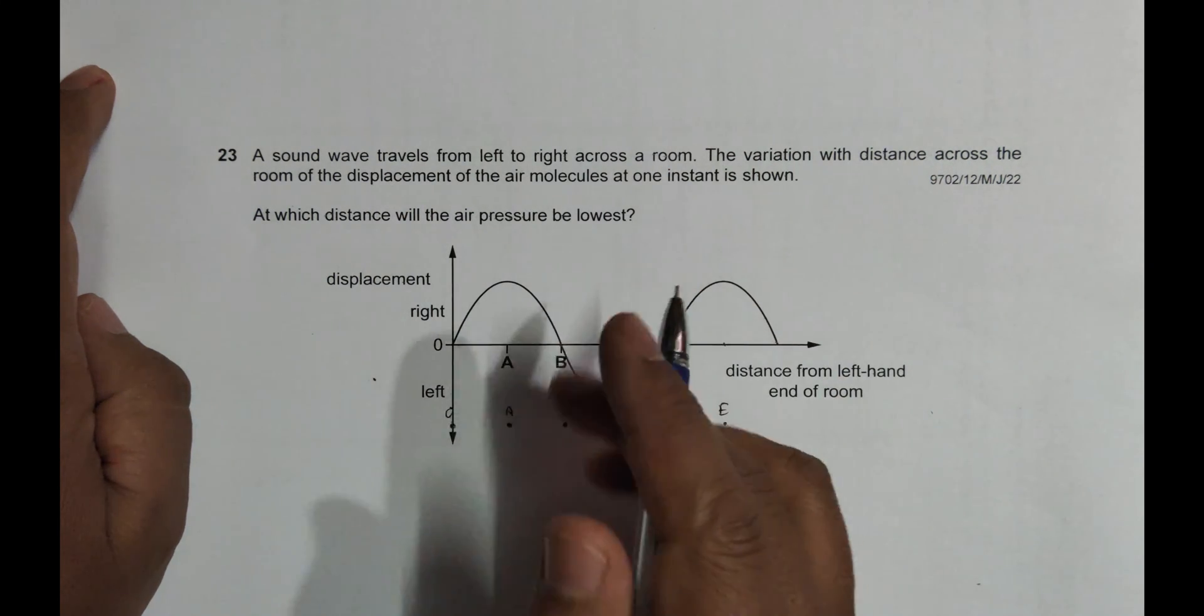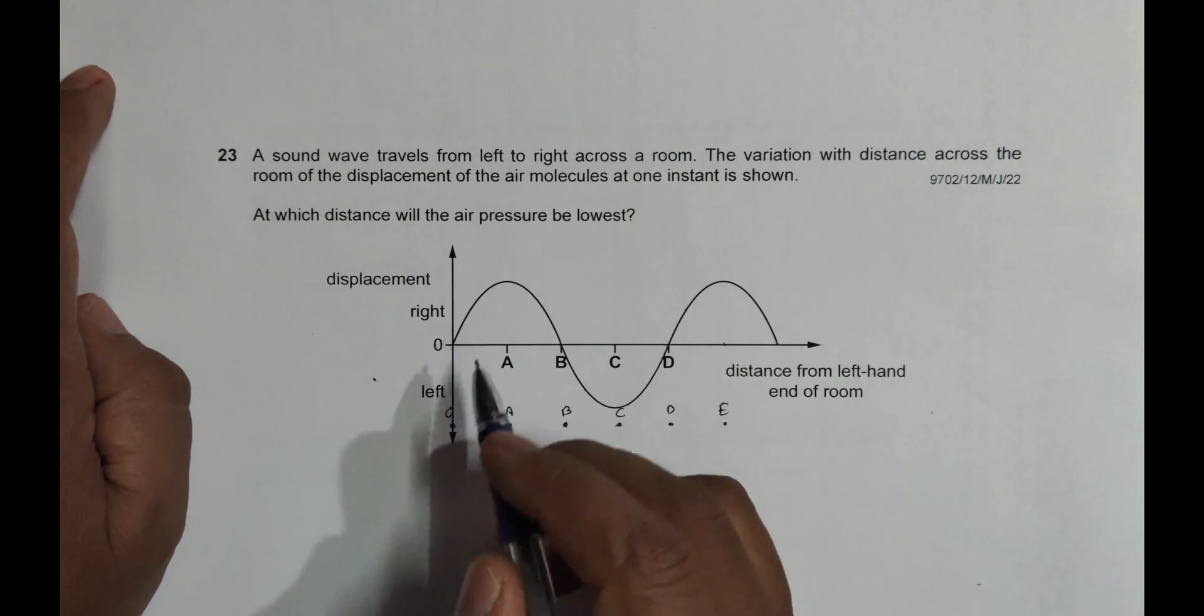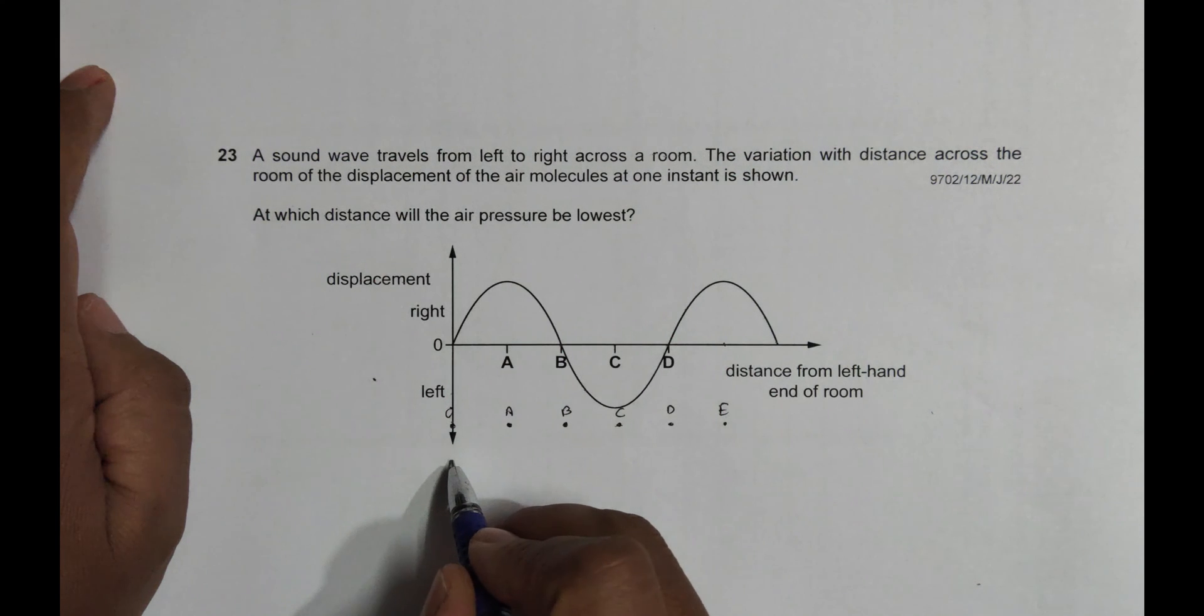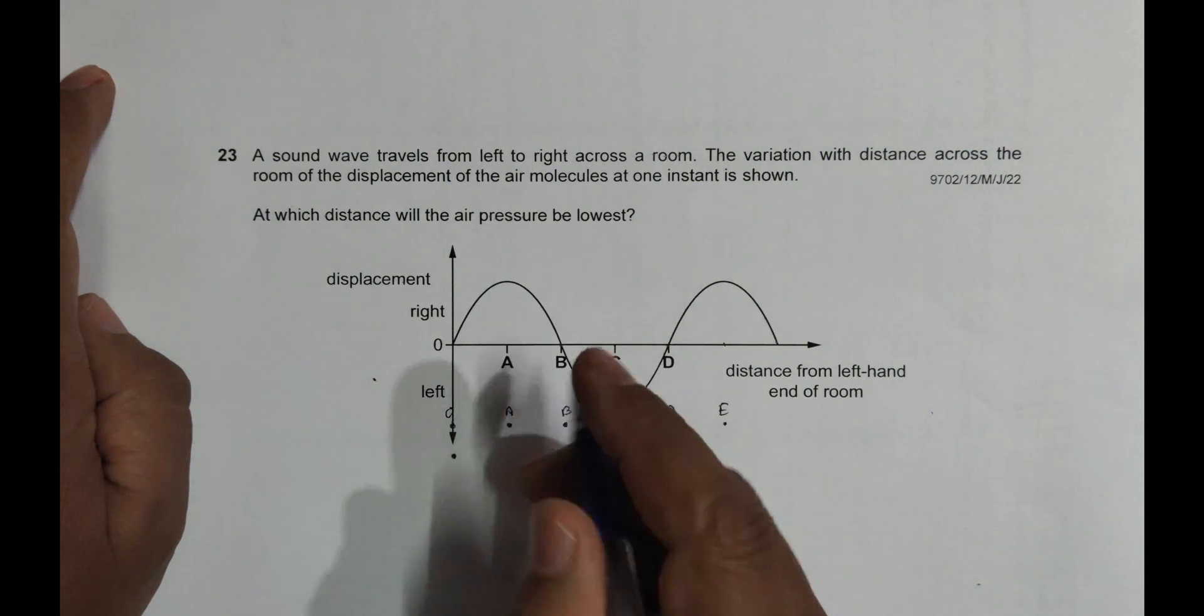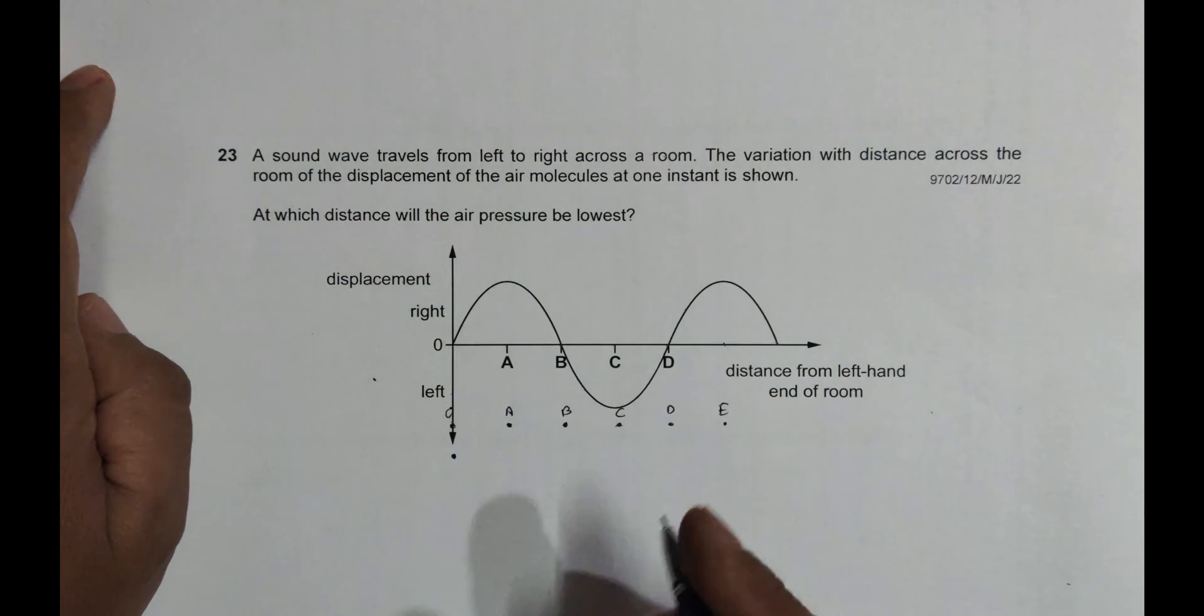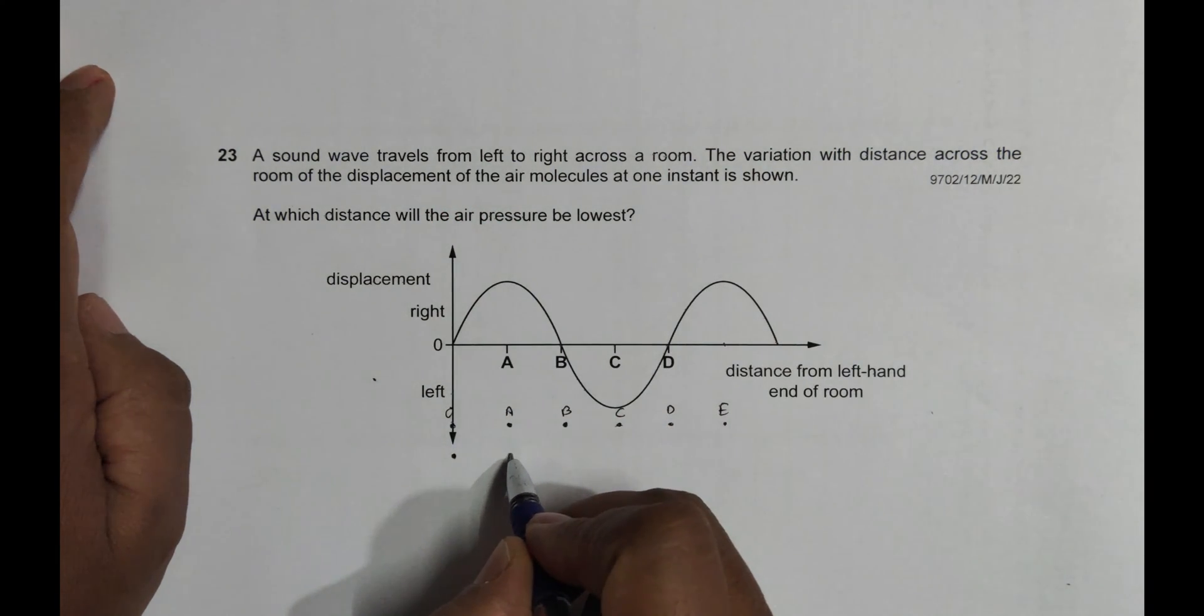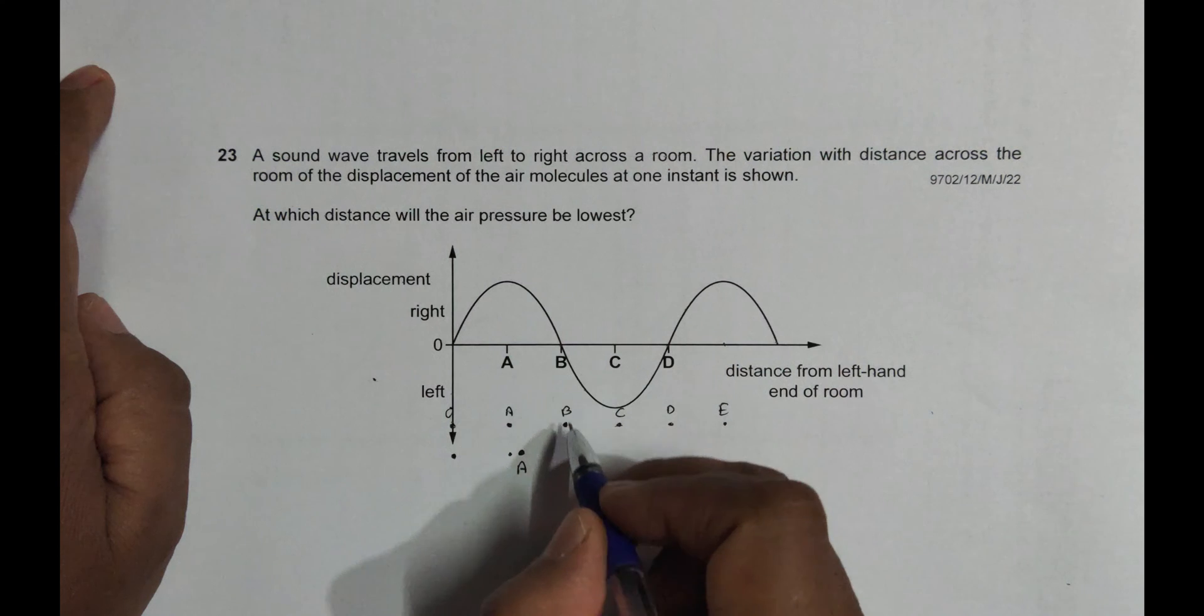Now, what is happening is A is showing zero displacement, so the particle is here. E is showing maximum displacement, so if I take the positive as the maximum, E is displaced right now not here, so here. This is A. B showing no displacement, so it should be here.